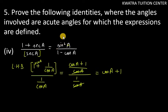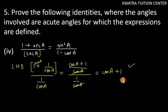But aap dekh sakte ho ki aapka right hand side pe sin square a over 1 minus cos a hai. Iska matlab isko hum aur reduce nahi kar sakte, kyunki already reduce ho chuka hai. So ab hum right hand side ko reduce karne ki koishish karte hai.